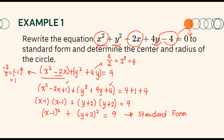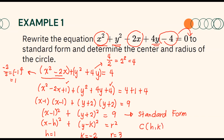This is already the equation in standard form. Remember that the standard form is x minus h quantity squared plus y minus k quantity squared equals r squared. Therefore, we can see that h equals positive 1 since we have x minus 1. Since we have positive 2 but the formula has y minus k, it follows that k equals negative 2. And since r squared equals 9, the square root gives us r equals 3. The center of the circle is at (1, negative 2) and the radius is equal to 3 units.